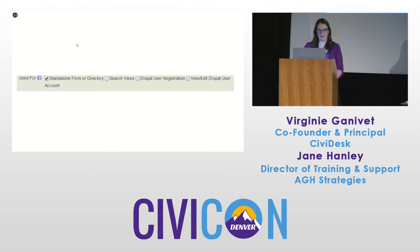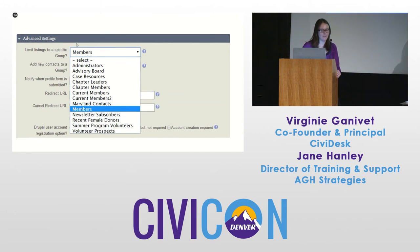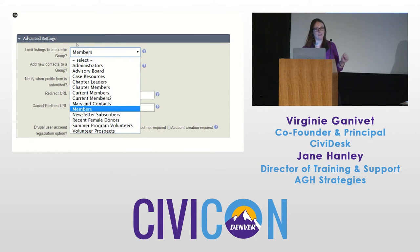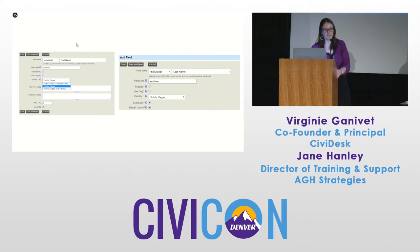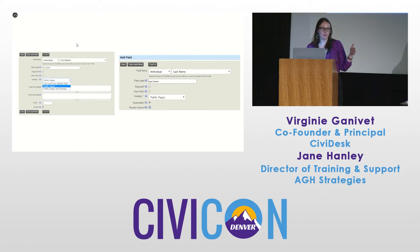Save the group and set it as a standalone form or directory. There's an advanced setting — when it says 'limit listings to a specific group,' that means only show the people in that group. If you didn't have that, it would show everybody. That's where we choose our member group. Then we start adding the fields we want to show, with different options for what information is searchable, what is viewable, based on your organization's preferences.